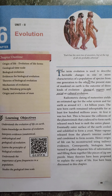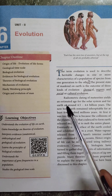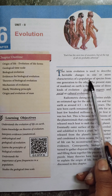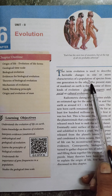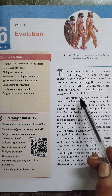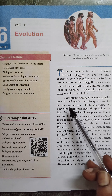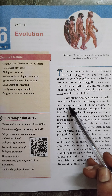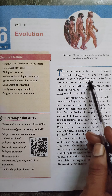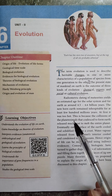Good morning students, welcome back to our zoology class. Today we are going to discuss Chapter 6, titled 'Evolution.' The term evolution is used to describe heritable changes in one or more characteristics of a population or species from one generation to the next. The key point here is changes — heritable changes — meaning those changes may transfer from one generation to the next.